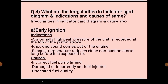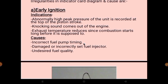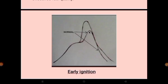Question 4: what are the irregularities in an indicator card diagram and their indications and causes? The first irregularity is early ignition. Its indications are: abnormally high peak pressure recorded at the top of the compression stroke, a knocking sound from the engine, and reduced exhaust temperature since combustion starts long before it is supposed to. Causes include incorrect fuel pump timing, damaged fuel injector, or fuel quality not up to standard.